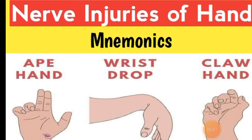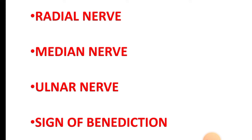Hello everyone, this is Dr. Huma Ibrah, and today we are going to discuss nerve injuries of the hand, including ape hand, claw hand, and wrist drop — covering radial nerve injury, median nerve injury, ulnar nerve injury, and the sign of benediction.